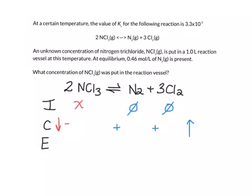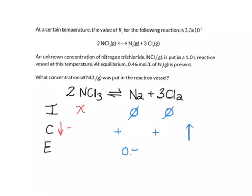Now we know the equilibrium concentration of nitrogen is 0.46 moles per liter. We can work backwards, so we know that the change here was 0.46, and we can solve now for this change in chlorine.